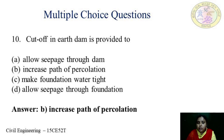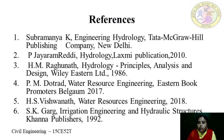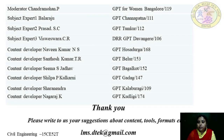The final question: a cutoff in an earth dam is provided to — hinder seepage through the dam, increase the path of percolation, make the foundation watertight, or hinder seepage through the foundation? The answer is B, increase the path of percolation. A watertight cutoff is provided at the upstream toe of the dam, along the contact of the impervious membrane with the foundation and abutments, to prevent seepage under the dam and to provide support for the weight and thrust of the impervious structure. With this, we come to the end of this session.